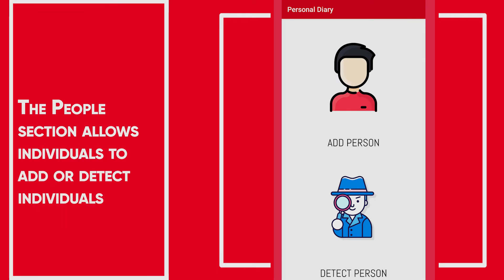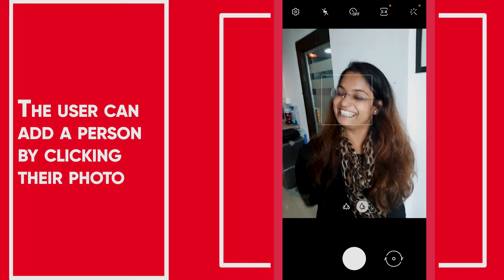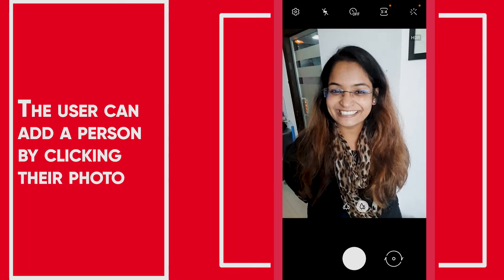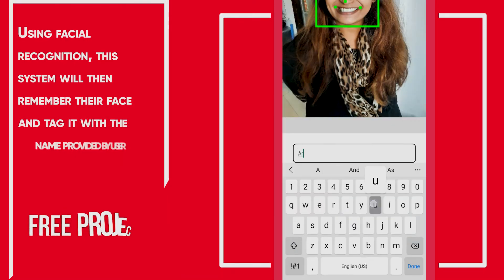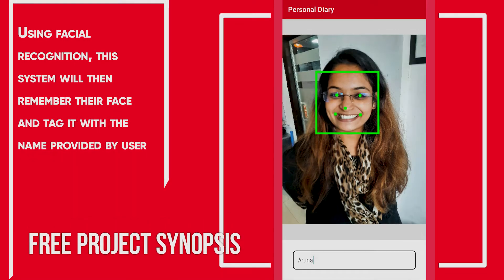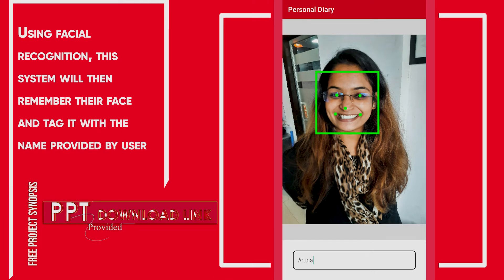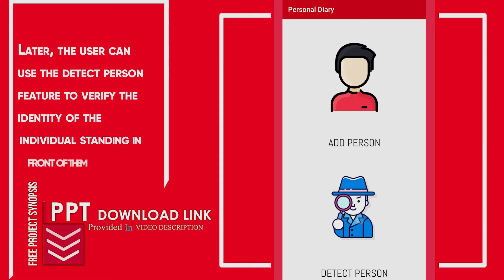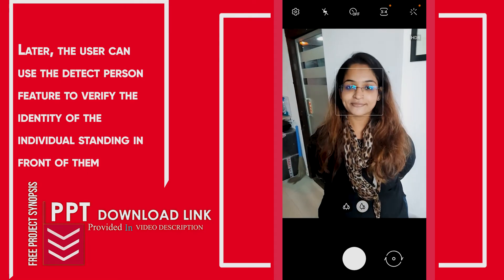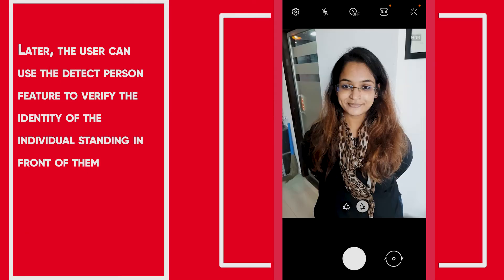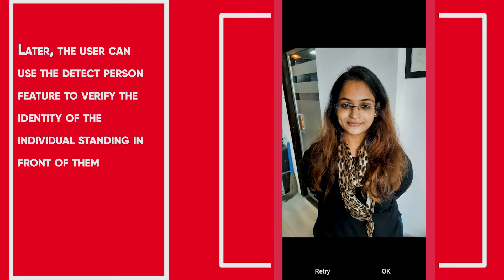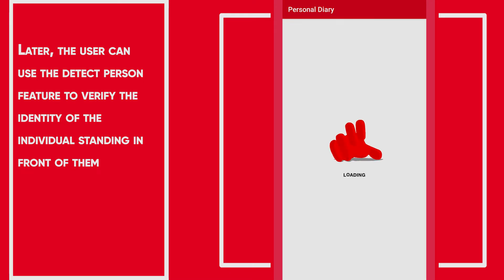The People section allows individuals to add or detect individuals. The user can add a person by clicking on their photo. Using facial recognition, this system will then remember their face and tag it with the name provided by the user. Later, the user can use the detect person feature to verify the identity of the individual standing in front of them.